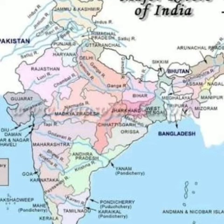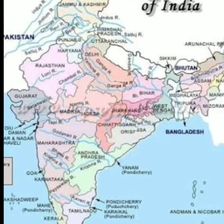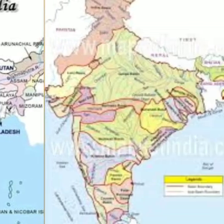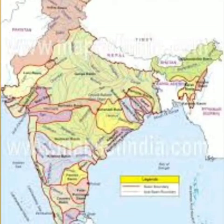One is the Indus River System, the second is the Ganga River System, and the third is the Brahmaputra River System. These three drainage systems cover North India.